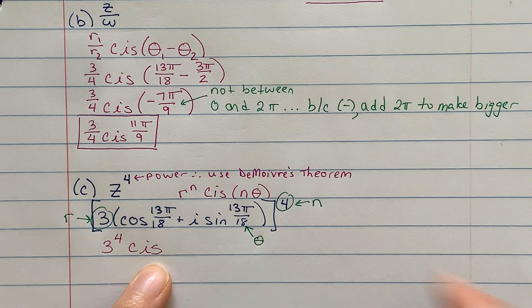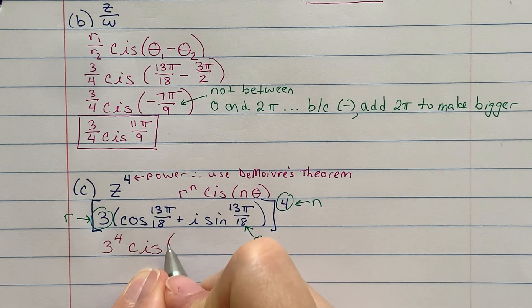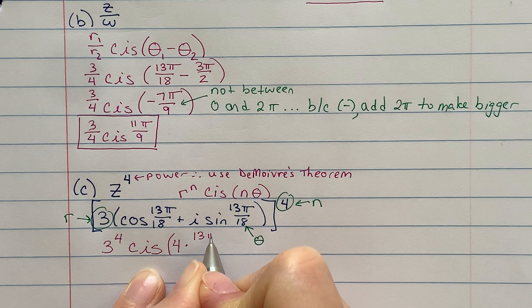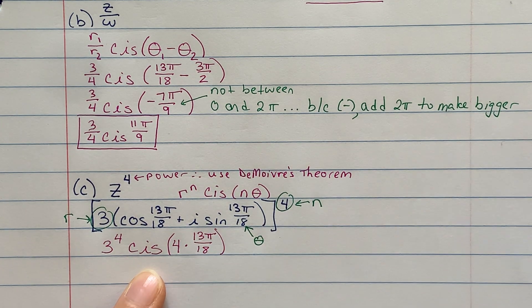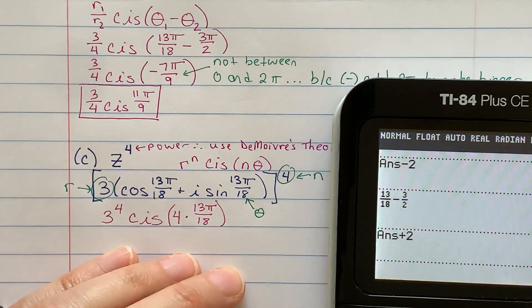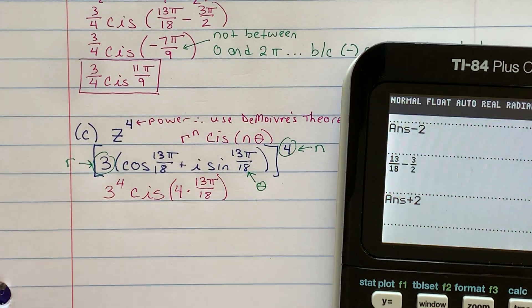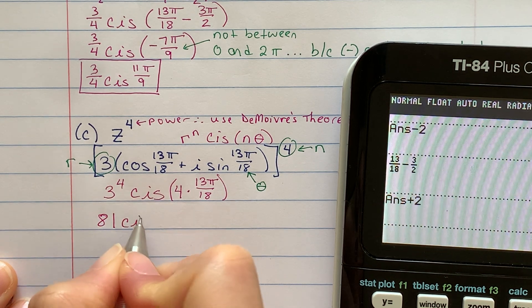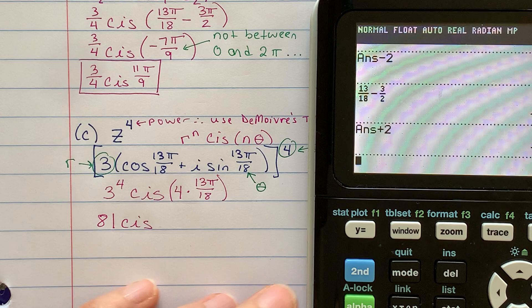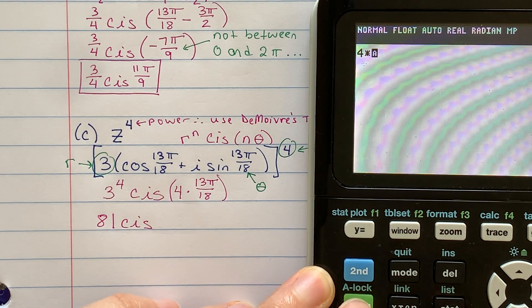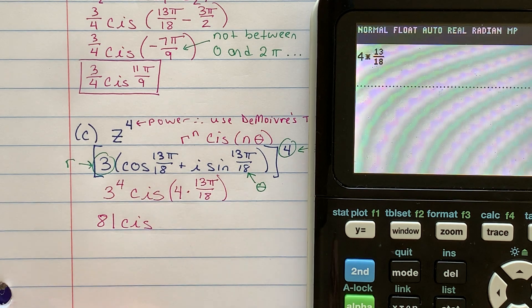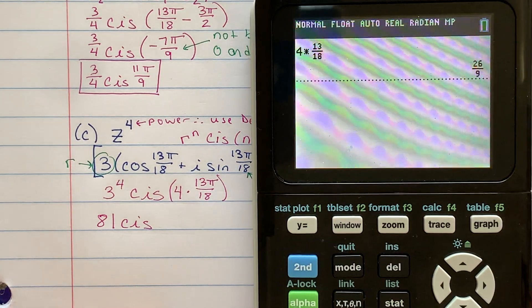So let's see. N times theta. So in this case, it's four times 13π over 18. All right, so now I'm going to use my calculator here. I know what three to the fourth is, because I know three squared is nine, and then nine times nine is 81. And we got Cis. Let's see. Clear out my screen. Four times 13 over 18. So it's 26 over 9. 26 over 9.